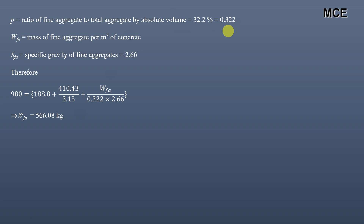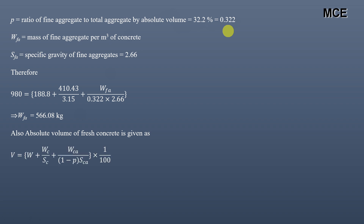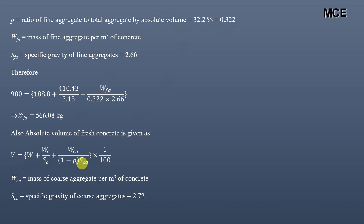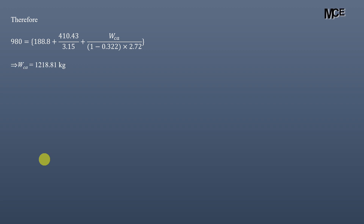For coarse aggregate, the formula is: V = W + Wc/Sc + Wca/((1−p) × Sca) × (1/100), where Sca = 2.72. Substituting all values gives the mass of coarse aggregate = 1218.81 kg.